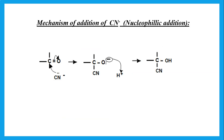The mechanism for addition of cyanide: remember that cyanide is acting as a nucleophile, so this is nucleophilic addition. The carbon has a slightly positive charge and the oxygen has a slightly negative charge. This allows cyanide to add to the carbon, and then the O⁻ picks up an H⁺ to form the alcohol.